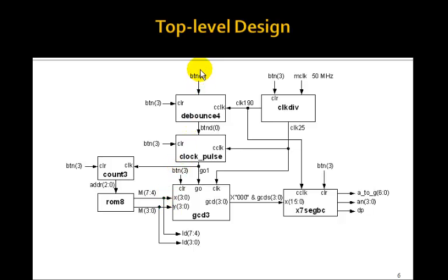And then when we push the button 0, we got a clock pulse, which would compute the greatest common divisor and display it on the 7-segment display. What we'll do is we'll replace the switches with our ROM.